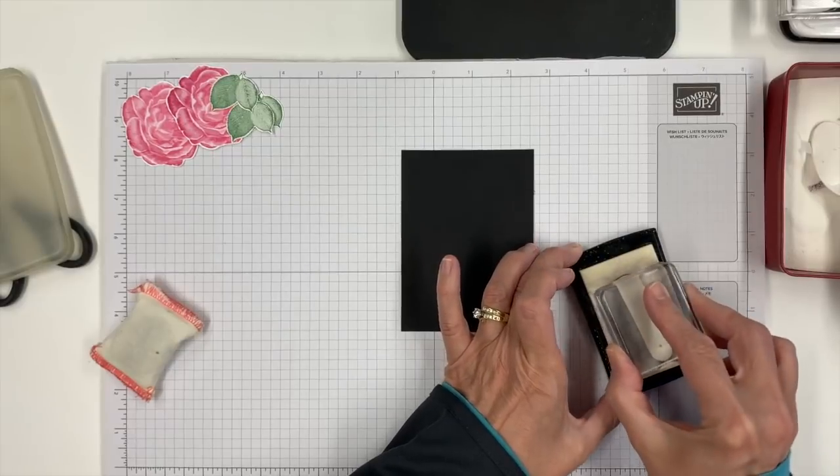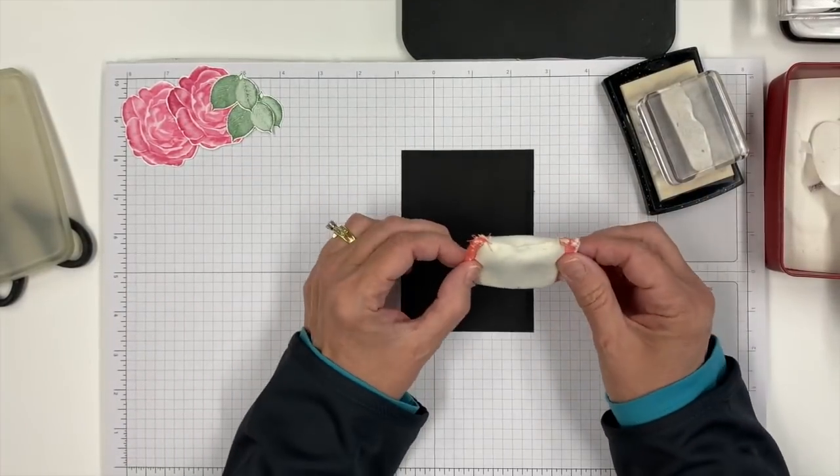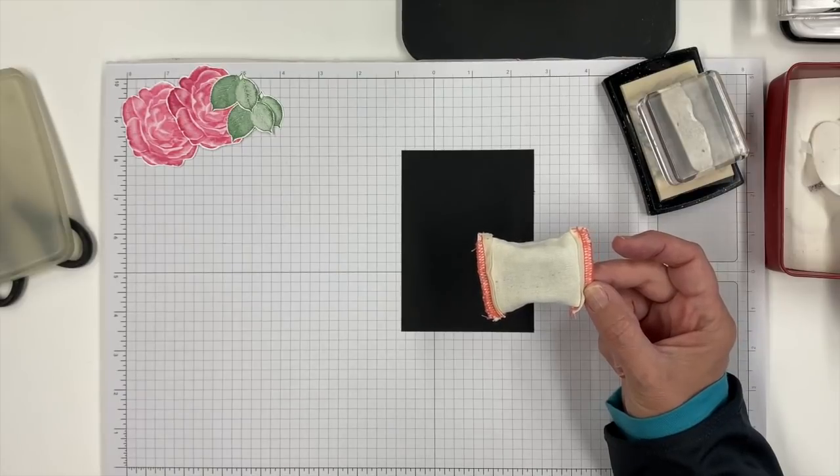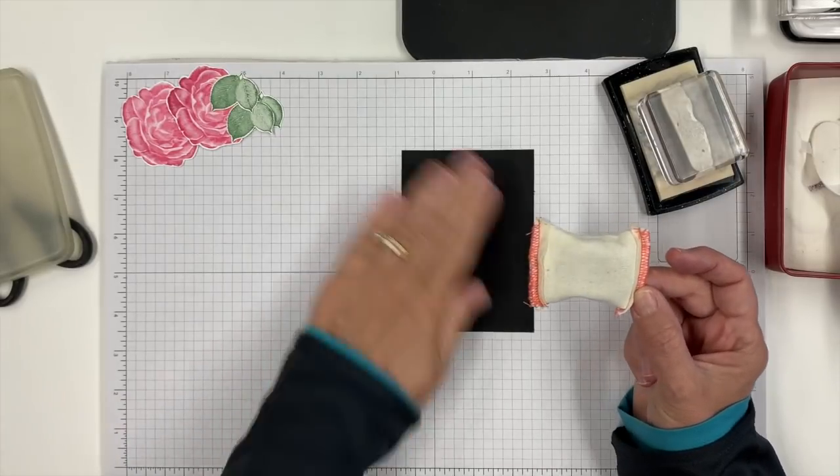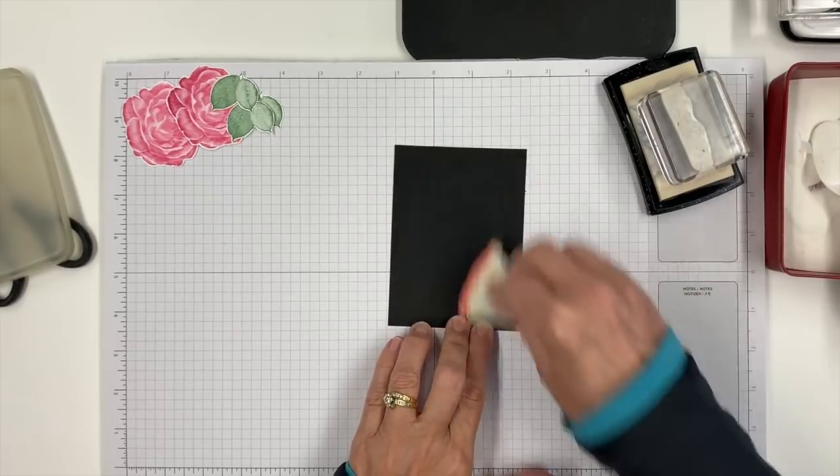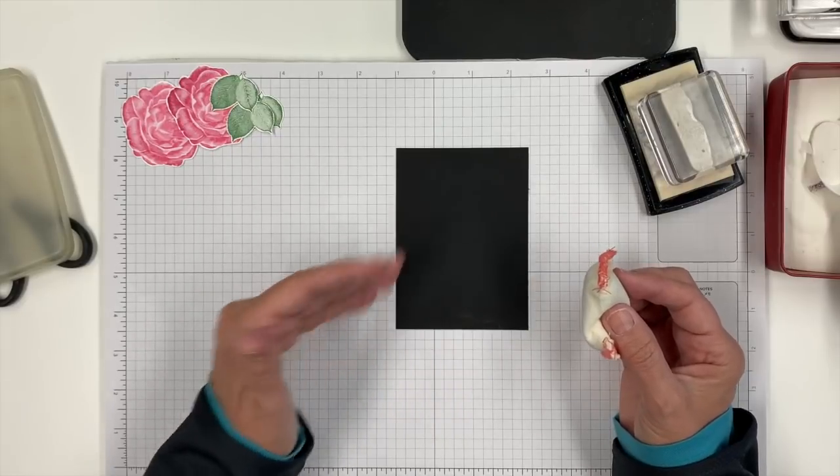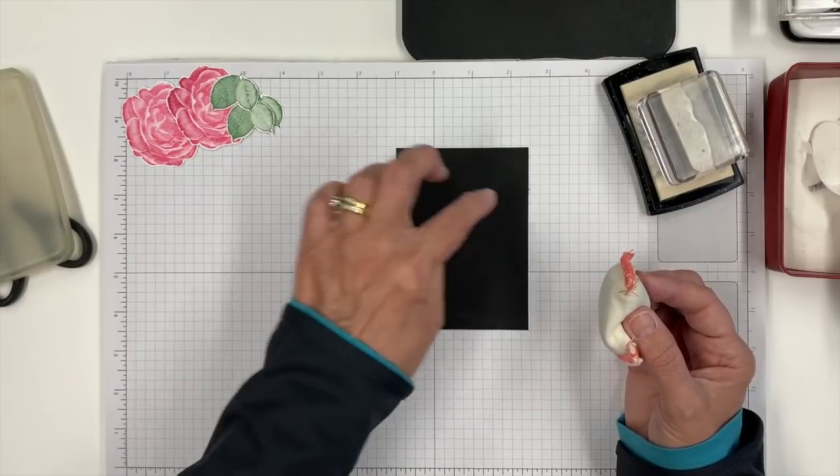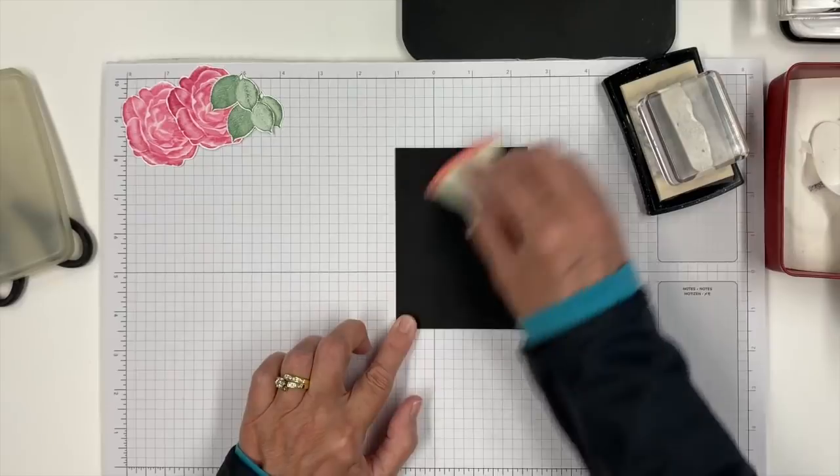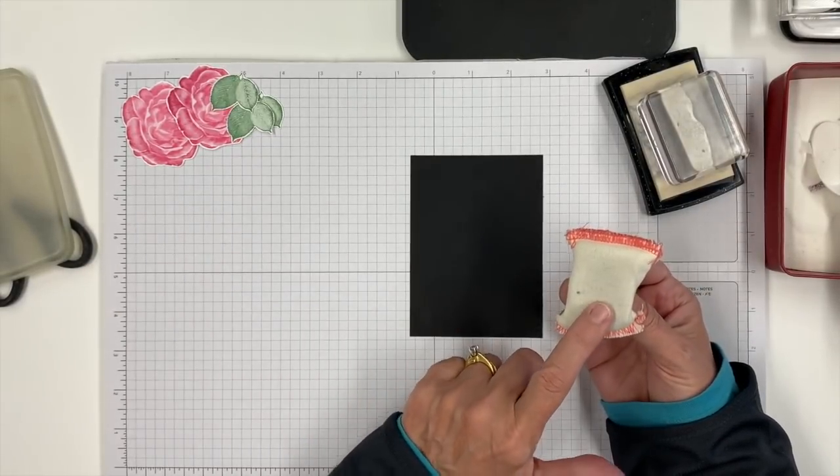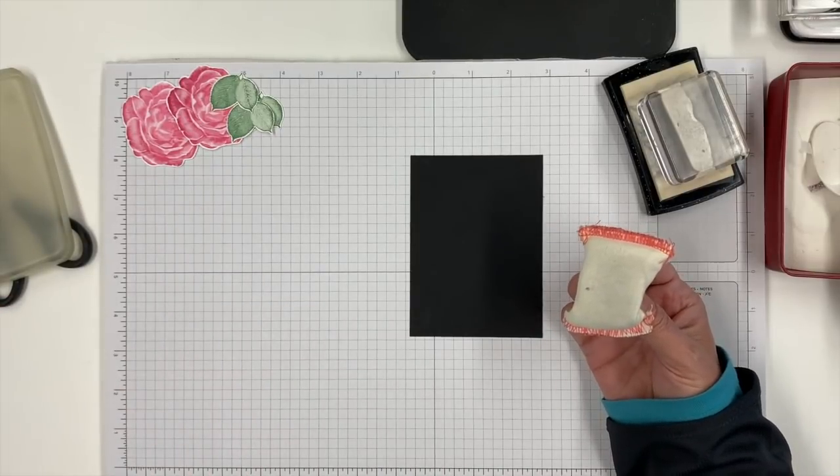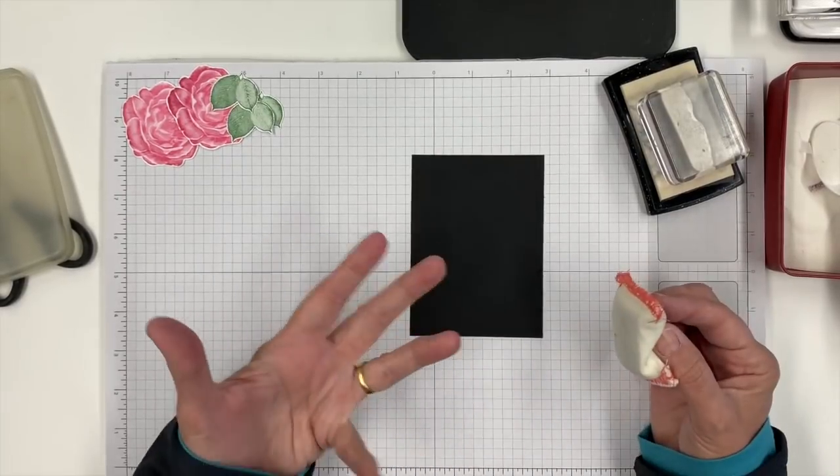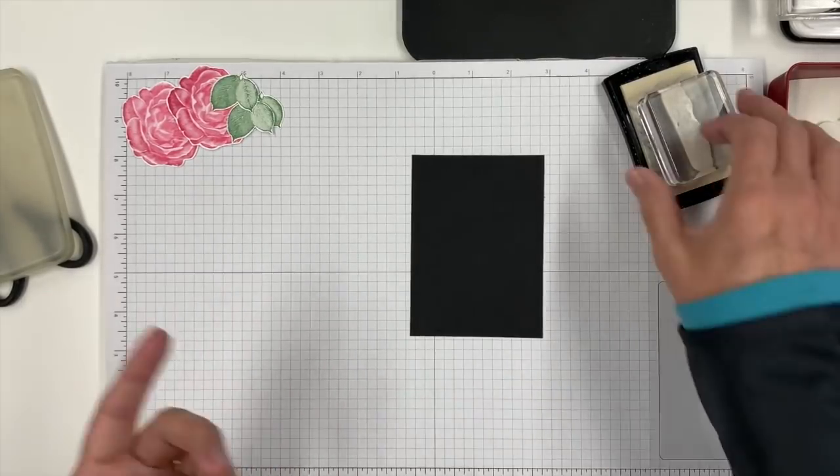Before we do that, this is called an embossing buddy. It takes the static off your cardstock so little specks of powder don't stick where you don't want them. If you don't have this or can't get one, a dryer sheet works really well. Just rub it to get the static and oils off your cardstock so that powder doesn't stick to it.